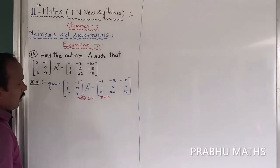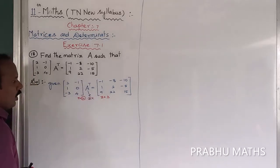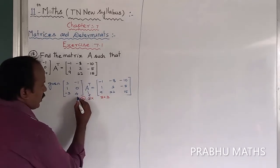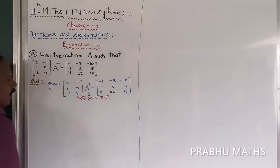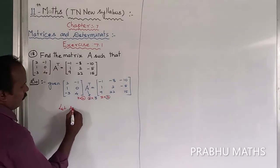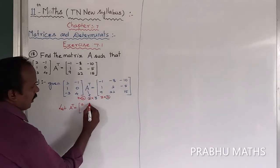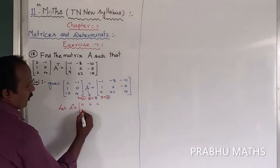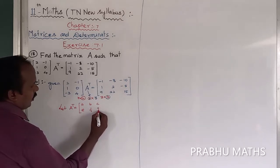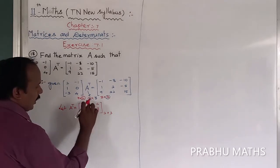The column of the first matrix is 2, so A-transpose must also have 2 rows. The remaining dimension gives 3, so the order of A-transpose is 2×3. Let us consider A-transpose as a 2×3 matrix — 2 rows and 3 columns — with entries A, B, C in the first row and D, E, F in the second row.